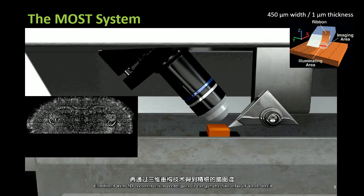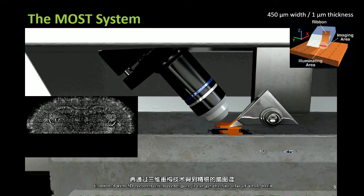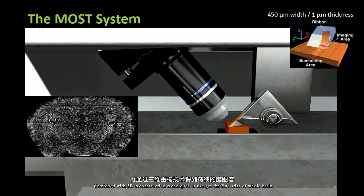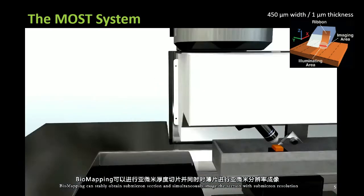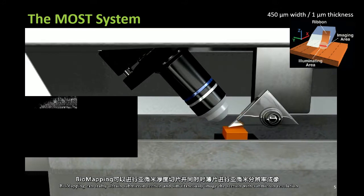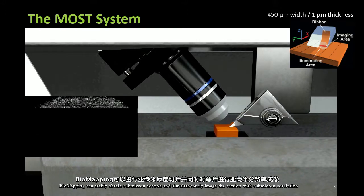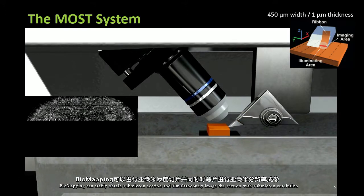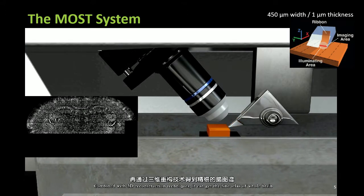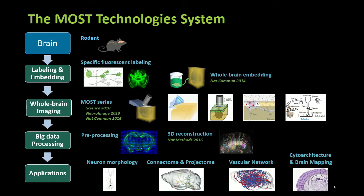We show 40 long-distance projection neurons of the Thy1-EYFP H-line mouse brain. Our findings not only confirm some previously discovered pathways reported in the literature, but also highlight several unreported putative projection pathways. Many neurons here are globally distributed in the brain. With conventional brain slice measurements, if you cut in any direction, you will lose a lot of information.